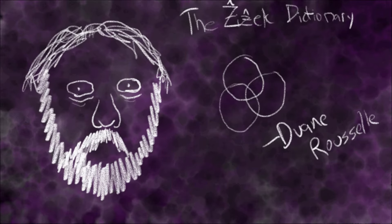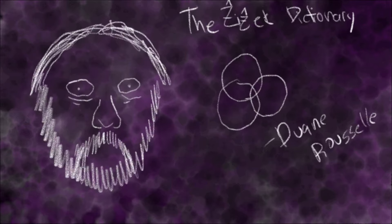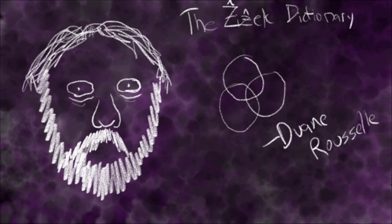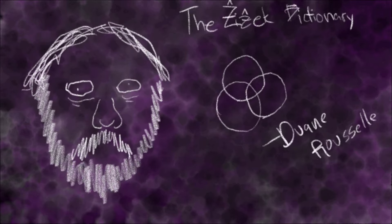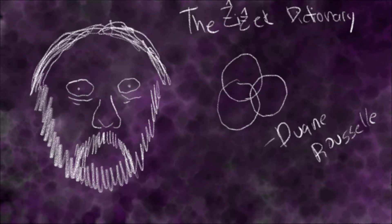Lacan described a tripartite structure of being that was summarized with reference to the Borromean knot. The structure was such that if any one ring was cut and separated, then the entirety of the knot would come undone and induce psychosis in the subject. However, the integrity of the rings may be maintained during psychosis by way of the introduction of a fourth ring, named the synthome.